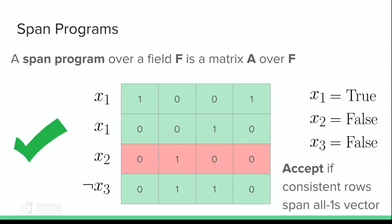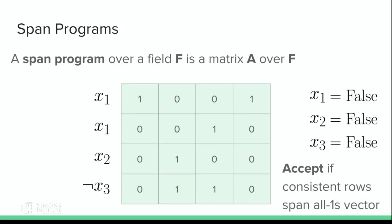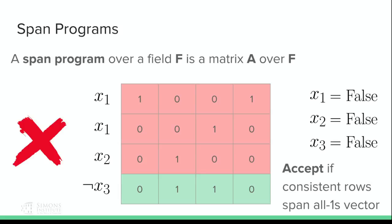For a second example, if we had true, false, false, now this row is left out. Observe that I'm going to let you add literals on multiple rows — we can reuse literals as many times as we want. And just for the sake of one rejecting input, if we have false, false, false, this is the only vector consistent with my input, and it obviously doesn't span the all-ones vector, so we wouldn't accept.